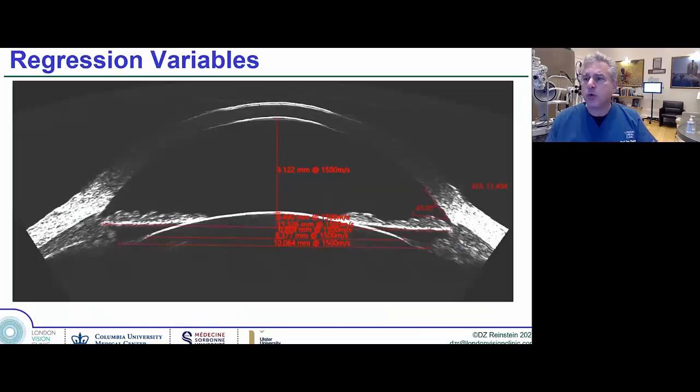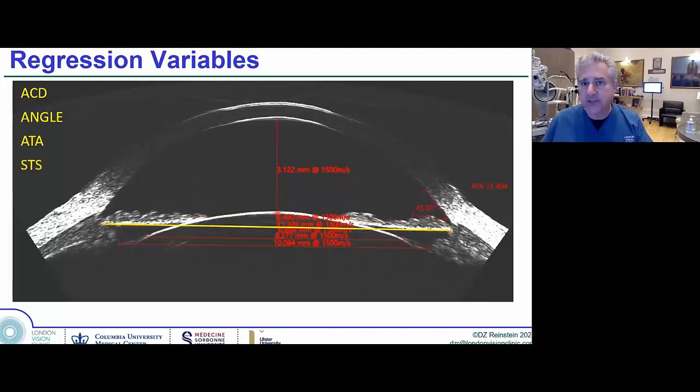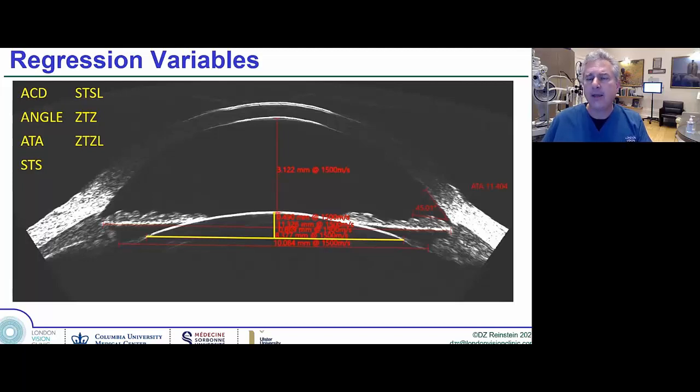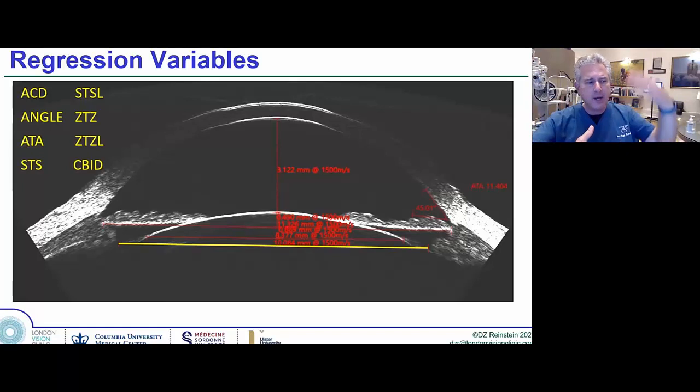So how did we approach this? We took the whiteboard approach and took all of the measurements we could conceive that might be of use: the anterior chamber depth, the angle of the angle, the angle-to-angle distance, the sulcus-to-sulcus distance, the sulcus-to-sulcus lens rise, the zonule-to-zonule distance, the zonule-to-zonule lens rise, and the ciliary body inner diameter. That was the last one we put in. I said, I don't think it's going to be of any interest because ciliary processes kind of float around. I thought that probably isn't a valuable number, but let's just stick it in.